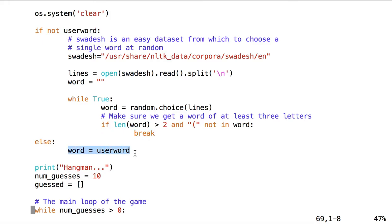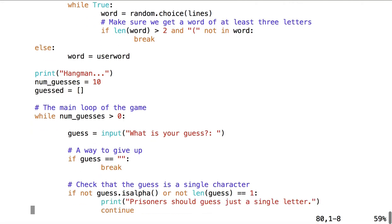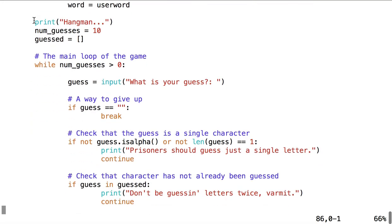Else we set the word as the user word. And then we print hangman. We set our number of guesses as 10. And then we start this list called guessed. And then we're ready to go into the main loop of the game.